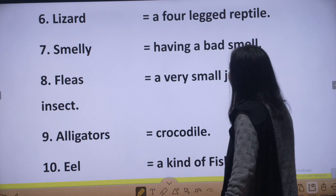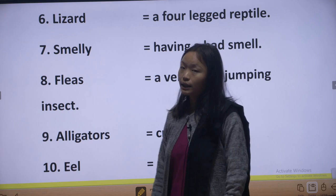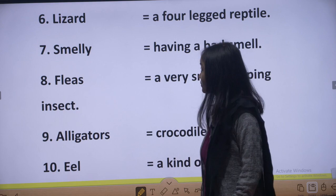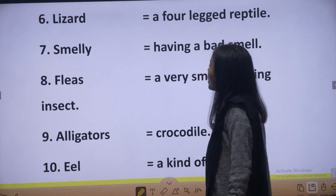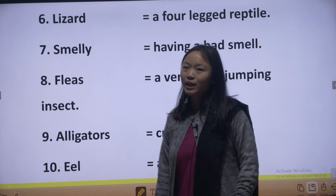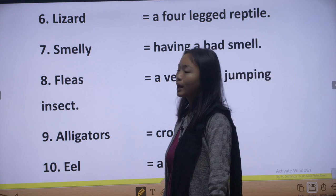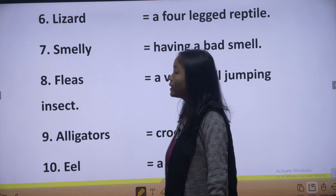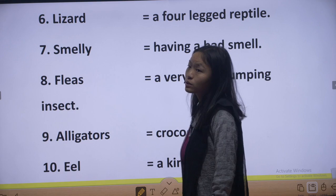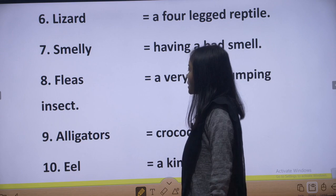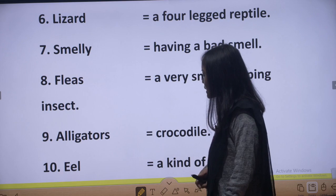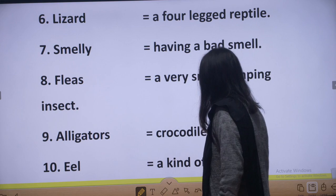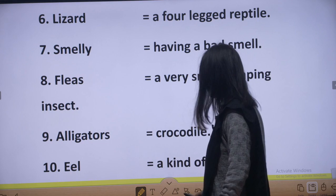Lizard — L-I-Z-A-R-D. A lizard is a four-legged reptile. Next, smelly — S-M-E-L-L-Y, which means having a bad smell, badbu. Number eight: fleas — F-L-E-A-S. A flea is a very small jumping insect found on animals like dogs. Next, alligators — A-L-L-I-G-A-T-O-R-S, looks like a crocodile but has a flat mouth. And eel — E-E-L, a kind of fish.